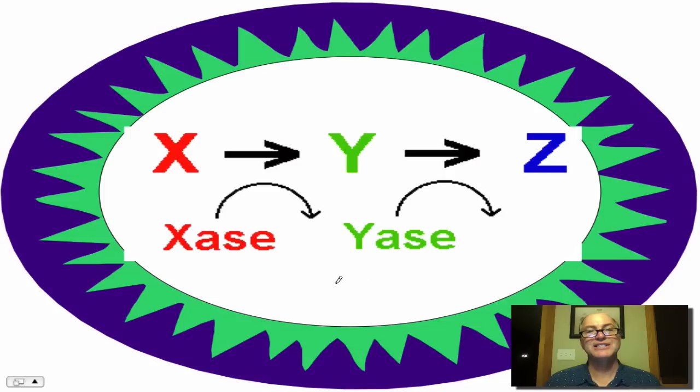Now, another way to look at this. Xase is an enzyme. What's the product of Xase? That would be Y. Now, there's another enzyme called Yase. What is the substrate for Yase? That's right, it would also be Y. So Y is both the product of Xase and the substrate of Yase. And the goal is to make product Z.